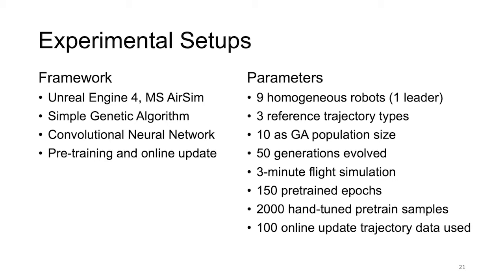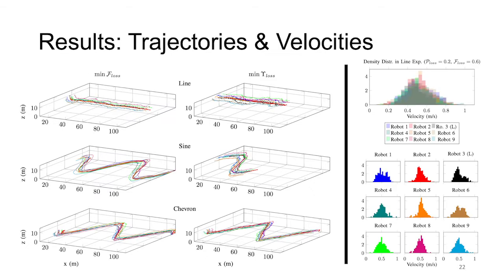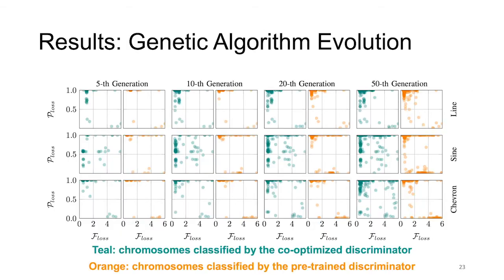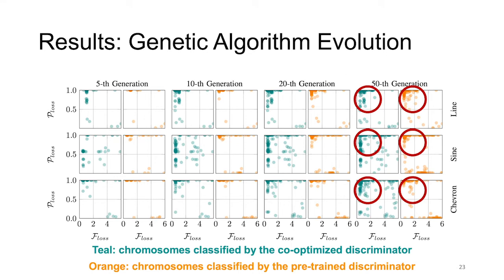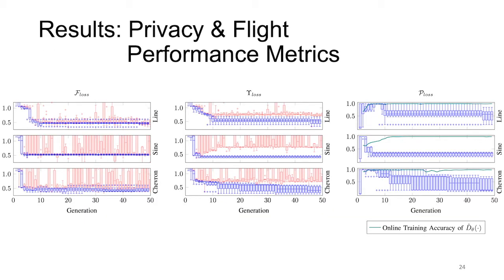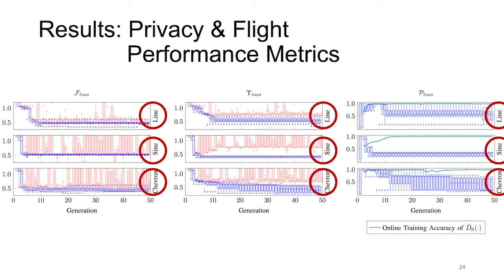The CNN is then updated via online training with the 100 most recent good flocking chromosomes generated by the GA. Comparing trajectories generated by the champion chromosomes with respect to performance loss on the left and the GA loss on the right, it can be shown that the private trajectories on the right tend to be slightly slower and less smooth. The desired evolution of the genetic algorithm is demonstrated by the presence of more and more points in the bottom left corner of each square — representing good privacy and good flocking — as the evolution progresses. Note that the dots in the top left corner are trivial solutions with good flocking but very poor privacy.